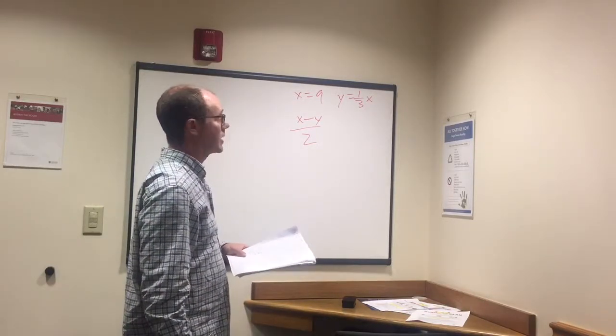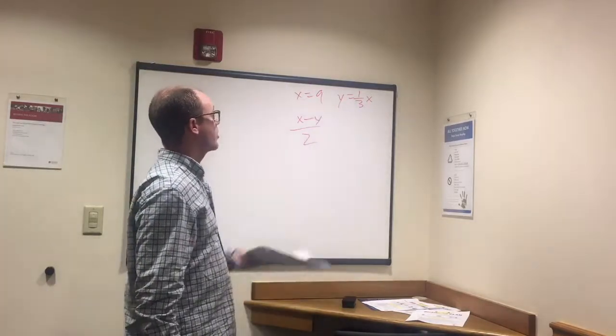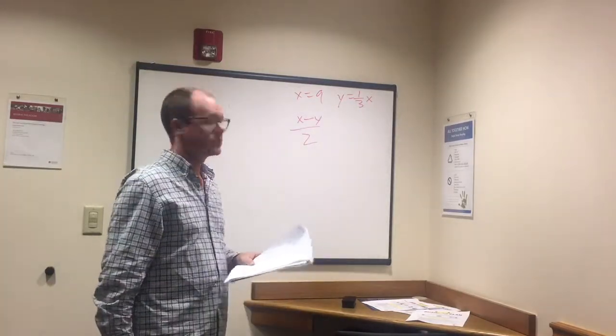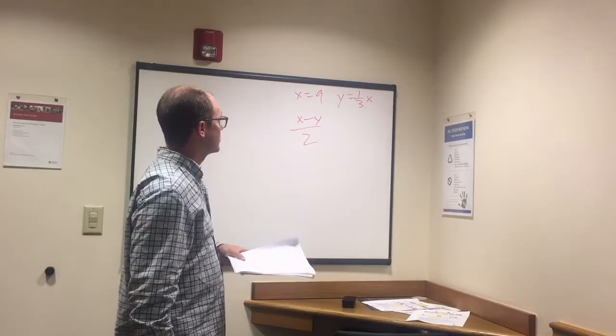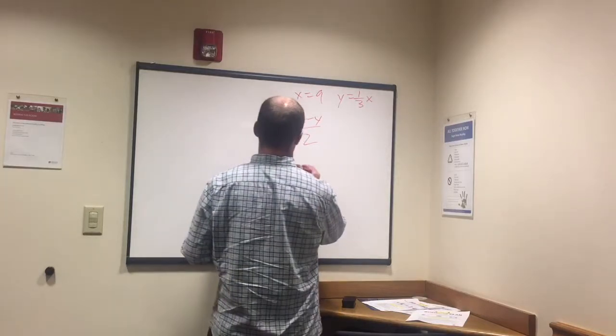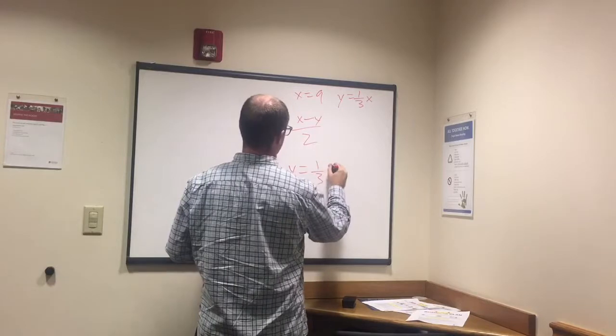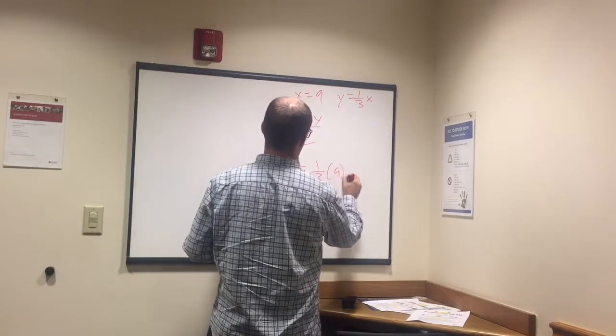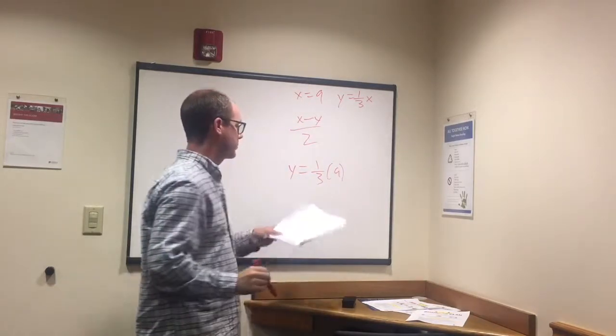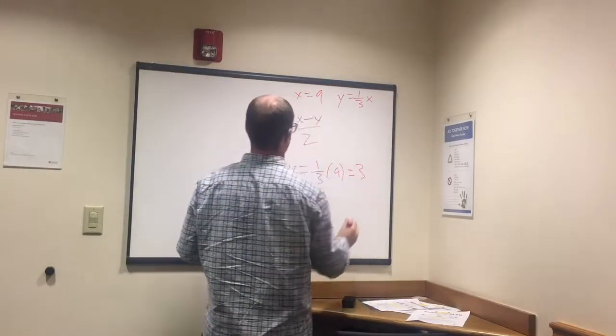How do we do this? So this looks complicated, doesn't it? The big thing is we need to figure out what y equals before we worry about x minus y divided by 2. So it's pretty simple, we just have to plug that in. So y equals 1 third x. Y equals 1 third times x, which is 9, which equals 9 over 3. 9 over 3 equals 3.